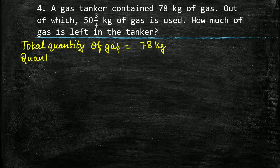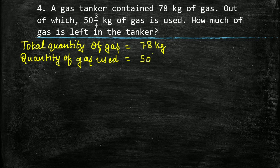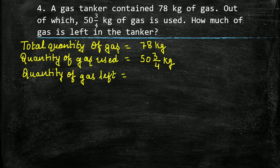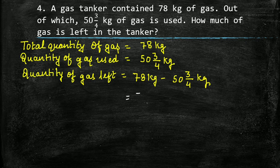Quantity of gas used is equal to 50 whole 3 upon 4 kg. Quantity of gas left will be equal to 78 kg minus 50 whole 3 upon 4 kg. We can write this as 78 upon 1 kg minus, converting to improper fraction: 4 into 50 is 200 plus 3, giving 203 upon 4 kg.